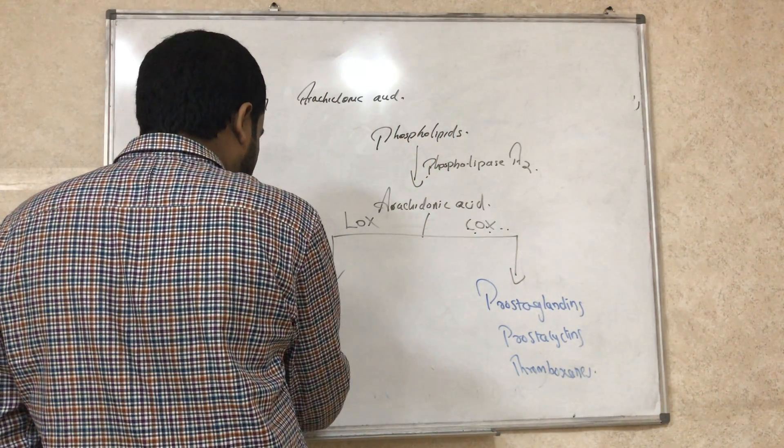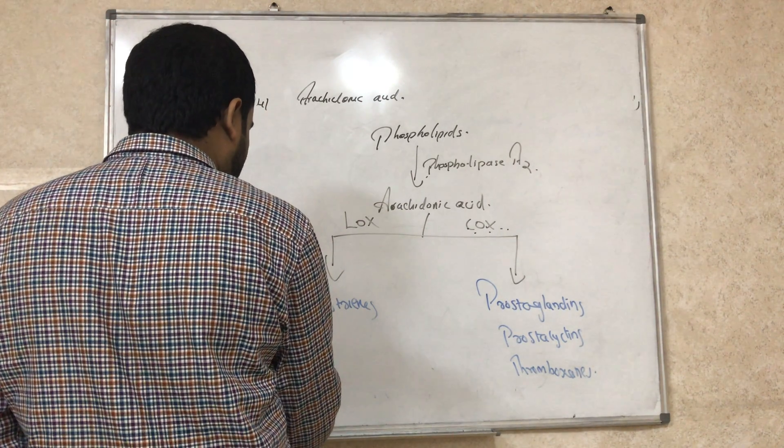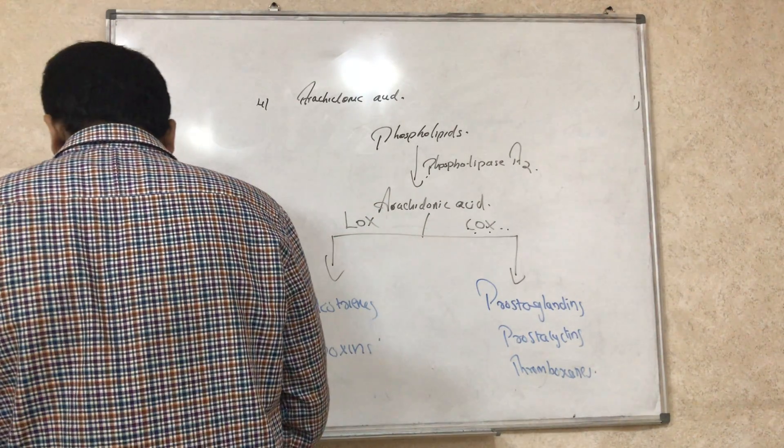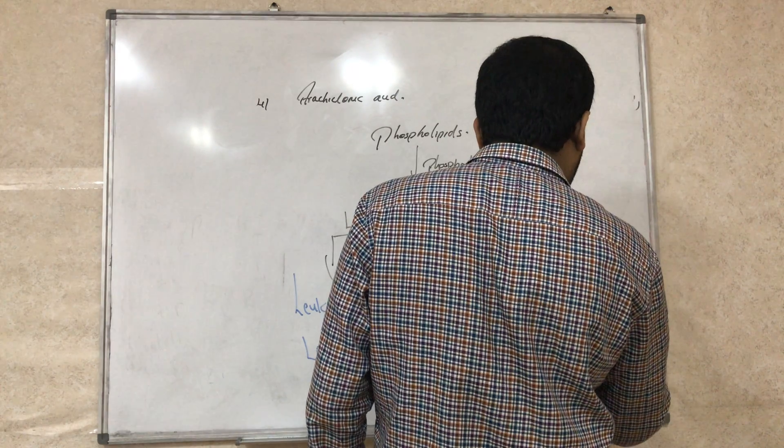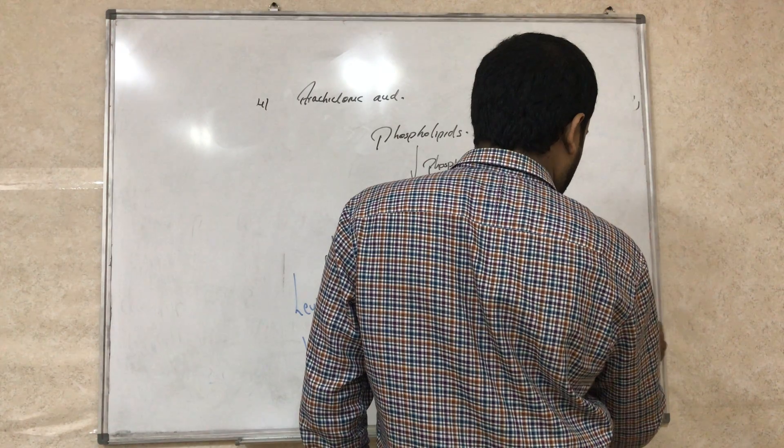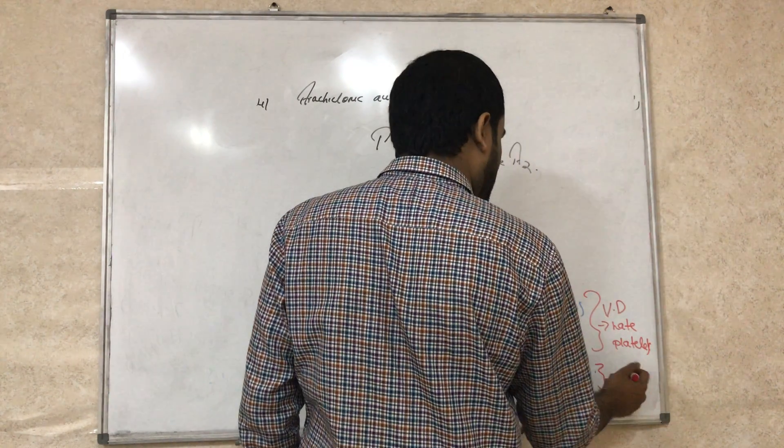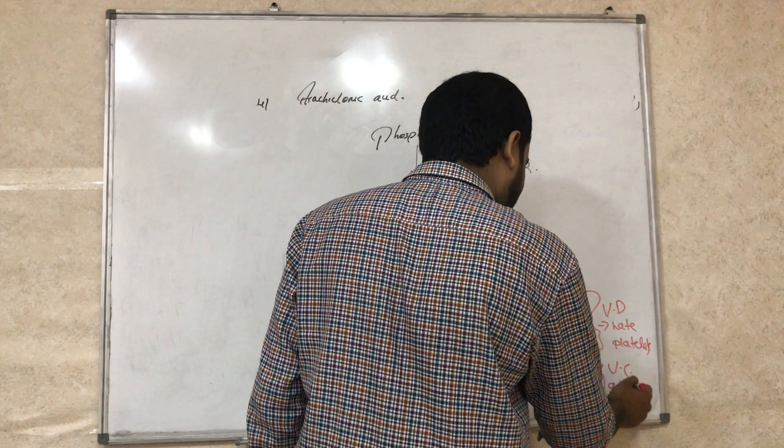LOX produces leukotrienes and lipoxins. Remember, prostaglandin and prostacyclin cause vasodilation and they hate platelets. But thromboxane causes vasoconstriction and they love platelets.